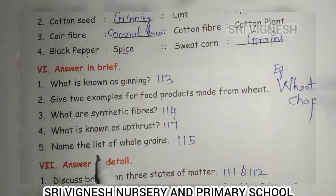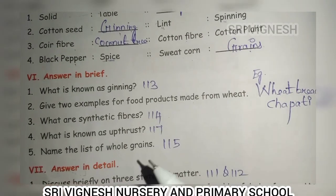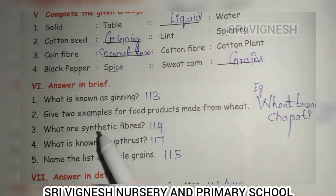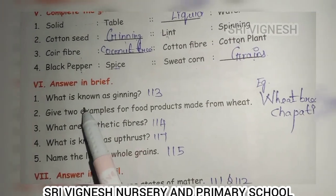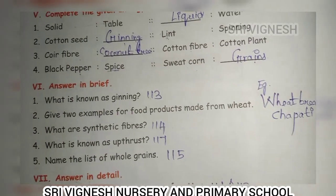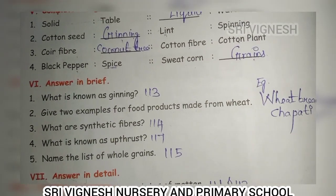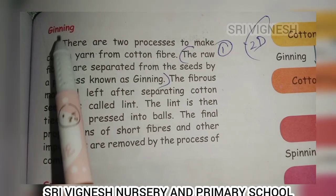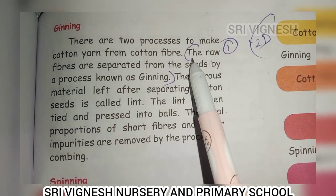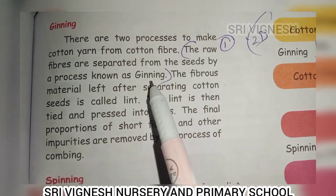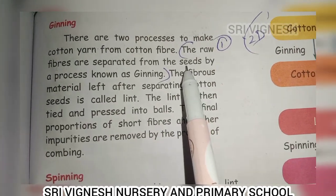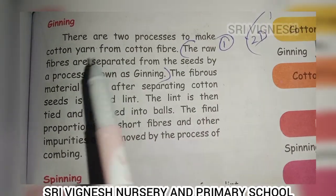Next, answer in brief. First question — what is ginning? It's on page 113. In ginning, the raw fibers are separated from the seeds. That is raw fiber — it is cotton fiber.